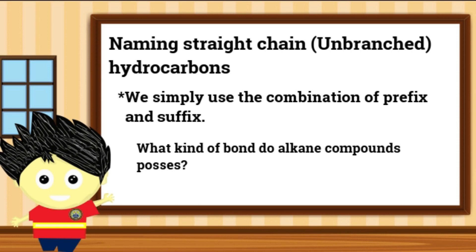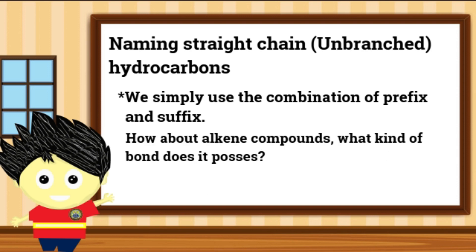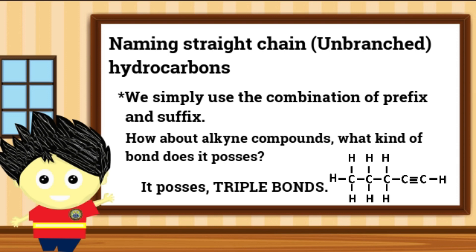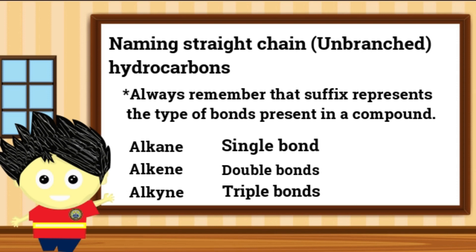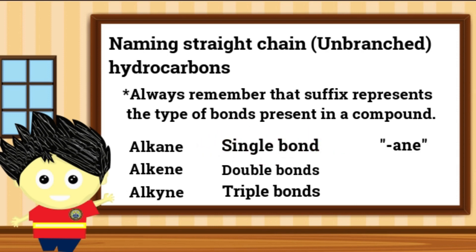Ano nga muli ang uri ng bond upang masabi nating ito ay isang alkane compound? Ito ay may single bond. Paano naman kung ito ay isang alkene? Ito ay mayroong presensya ng double bonds. At huli, ang alkyne ay may triple bonds. Sa uri ng bonds na ating mga nabanggit, dito natin ibabase ang magiging suffix ng isang compound. Kapag ang isang compound ay isang alkane o yung compound na may single bond, gagamitin natin ang suffix na -ANE. Kapag ito naman ay isang alkene compound na nagtataglay ng double bonds, gagamitin natin ang suffix na -ENE. At huli, kapag ito ay isang alkyne compound na may triple bonds, gagamitin natin ang suffix na -YNE.